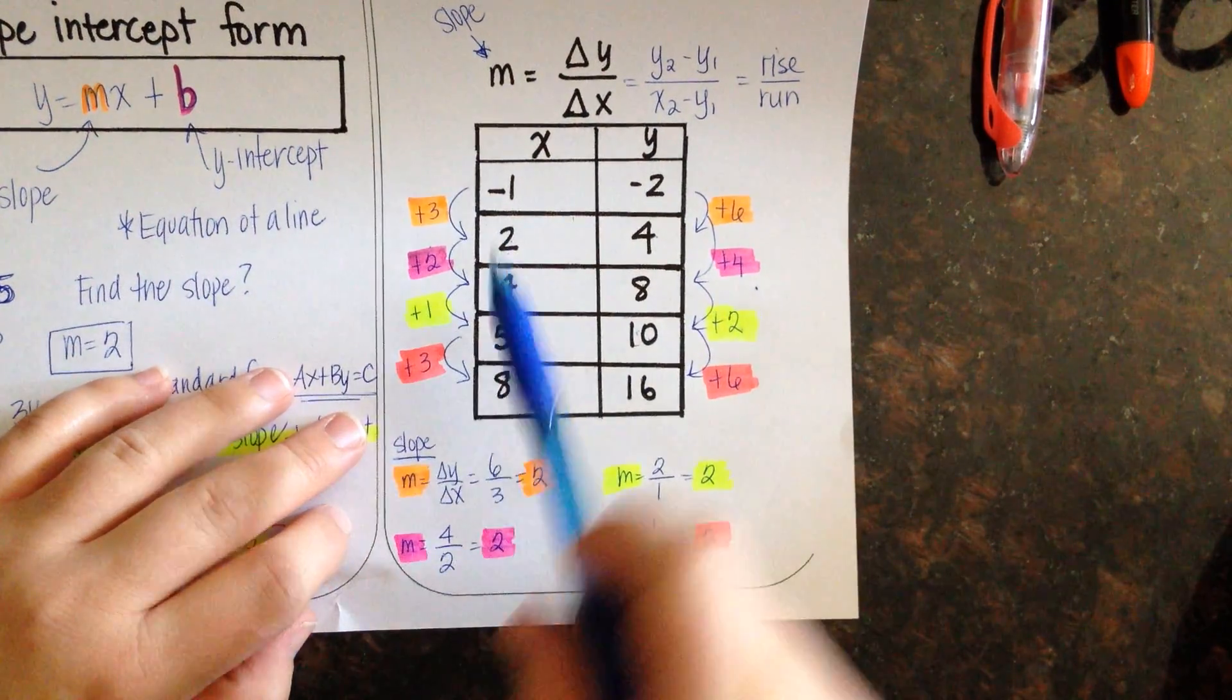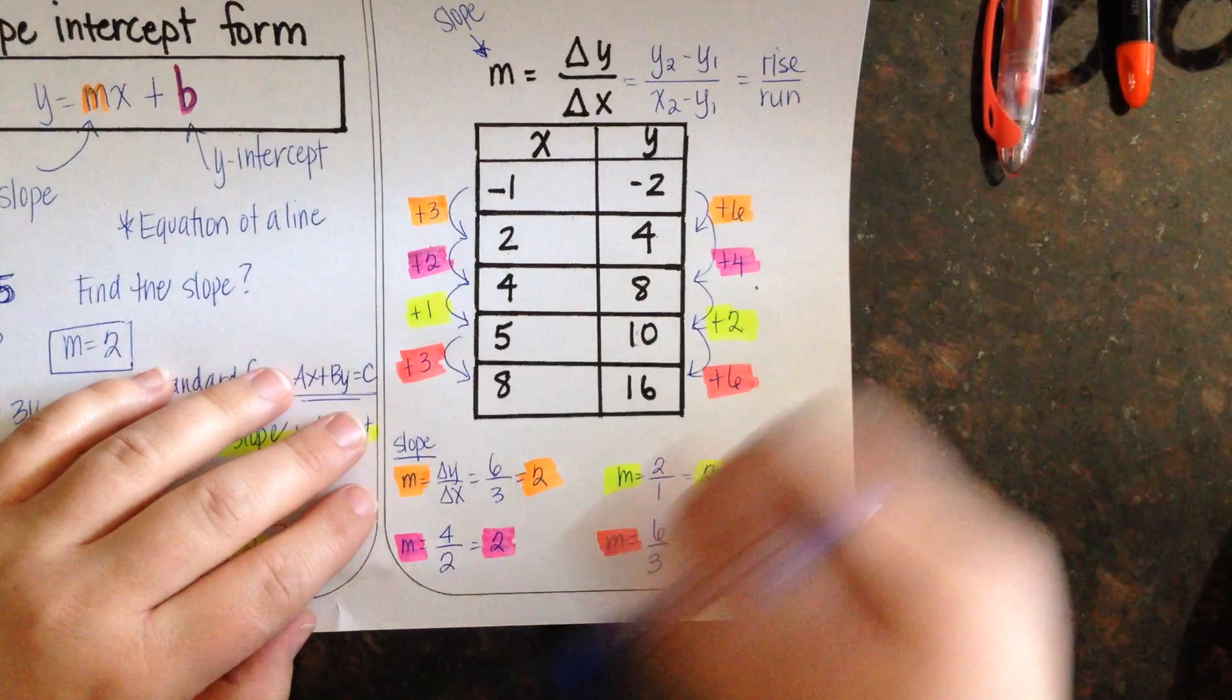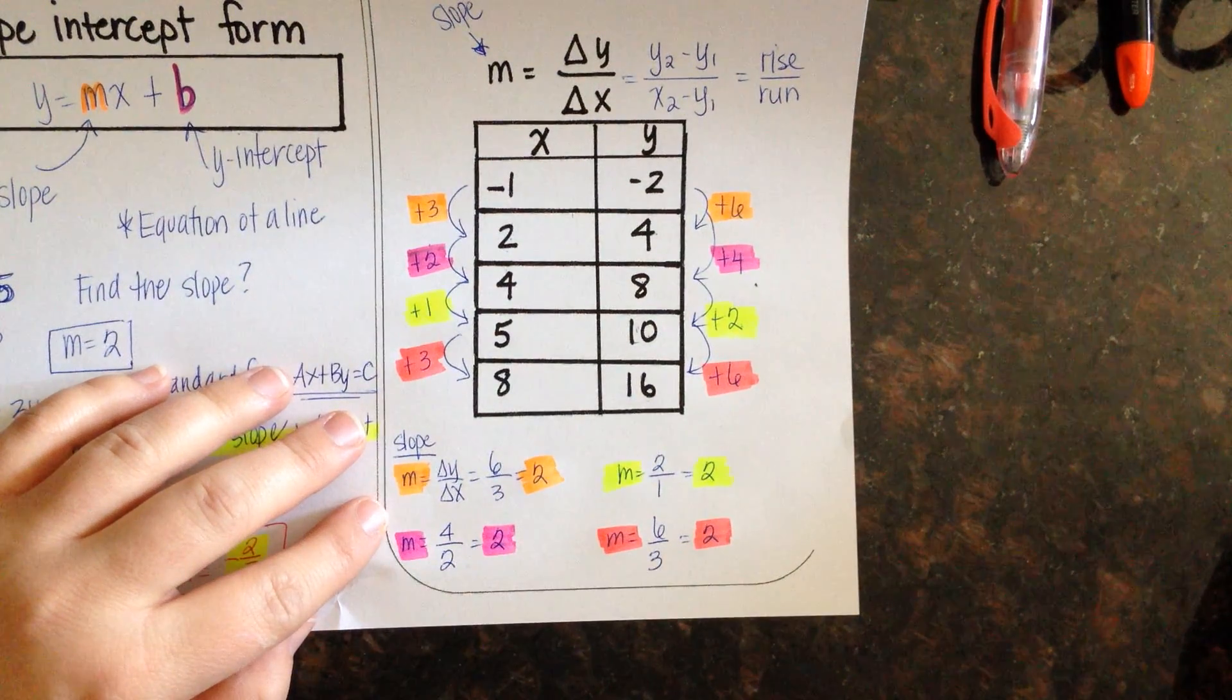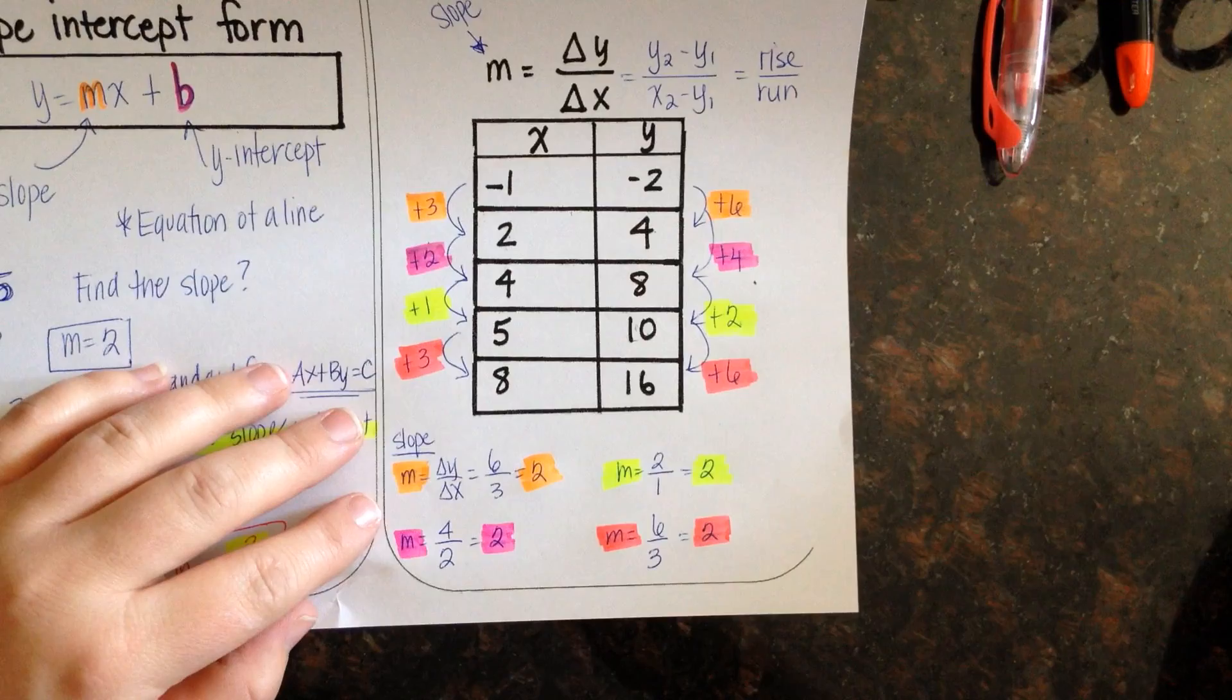And so finding slope from the table, unfortunately this is going to be the longest one. You find that pattern down here when you actually calculate the slope for it.